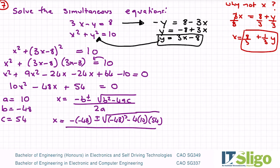All over 2a, so x is equal to minus minus 48 plus or minus the square root of b squared minus 4ac all over 2a. So it's equal to 48 plus or minus - I'm putting that whole square root bit into my calculator - I'm getting 12 for that, all over 20.